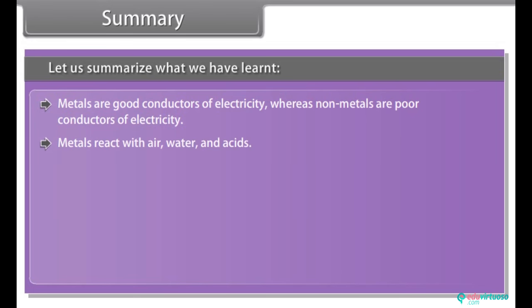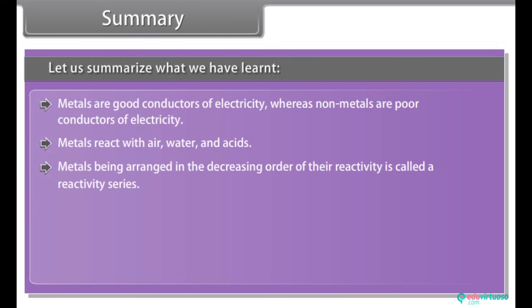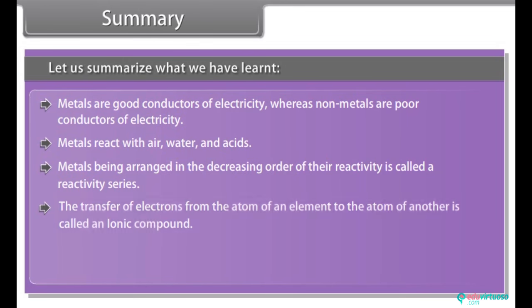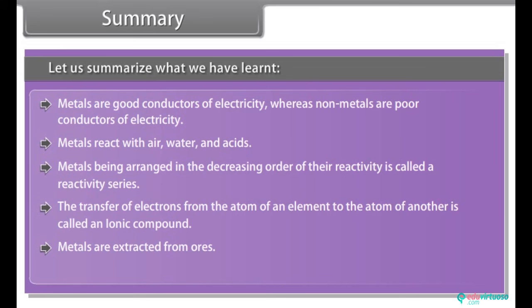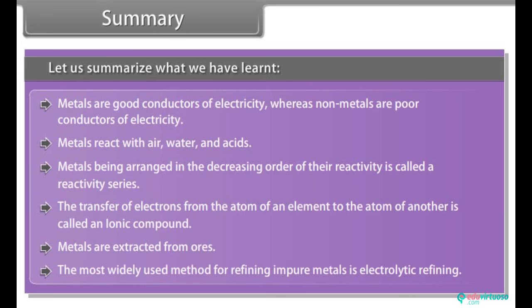Summary: Metals are good conductors of electricity, whereas non-metals are poor conductors. Metals react with air, water, and acids. Metals arranged in decreasing order of their reactivity is called a reactivity series. The transfer of electrons from the atom of one element to the atom of another forms an ionic compound. Metals are extracted from ores. The most widely used method for refining impure metals is called electrolytic refining.